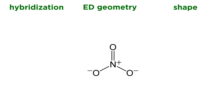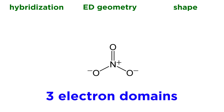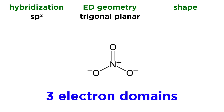How do we get the hybridization? We need to find out how many electron domains are surrounding the central atom. The nitrogen atom is surrounded by three electron domains — each covalent bond to those oxygen atoms is considered an electron domain. We have three oxygen atoms, so we have three electron domains. Anytime we have three electron domains, that means sp2 hybridization, needing an s orbital and two p orbitals to make the hybrid orbitals. So the hybridization is sp2.